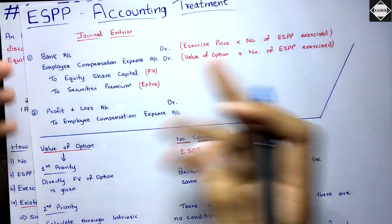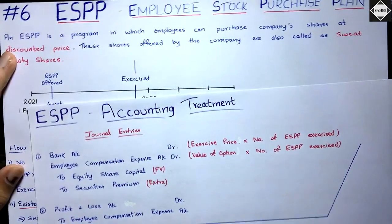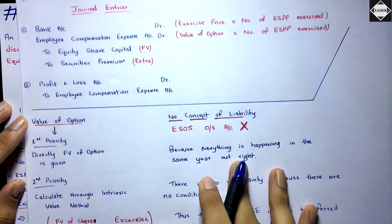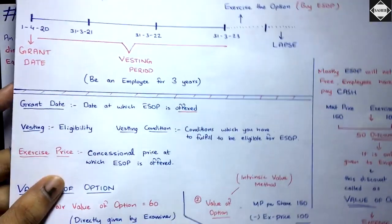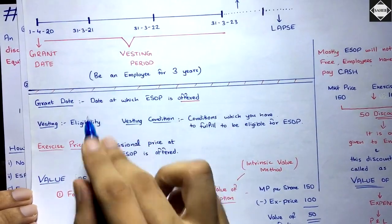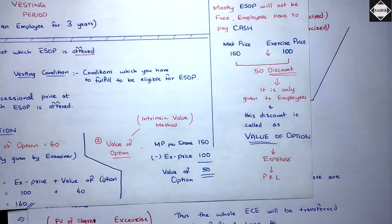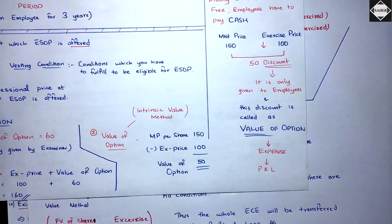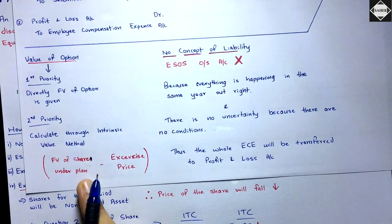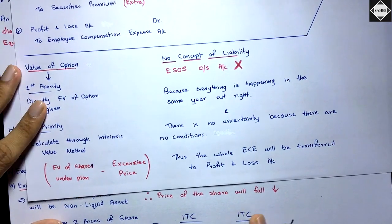The entry is simple: Bank Account debit for money received; debit the discount as expense; credit Equity Share Capital and Securities Premium for new capital created from sweat equity shares; then transfer Employee Compensation Expense to Profit and Loss. Exercise price means the concessional price at which ESPP is offered. There is no vesting condition. Grant date is the date ESPP is offered. Value of option: first priority is fair value of option if directly given, otherwise use fair value of shares under plan minus exercise price.